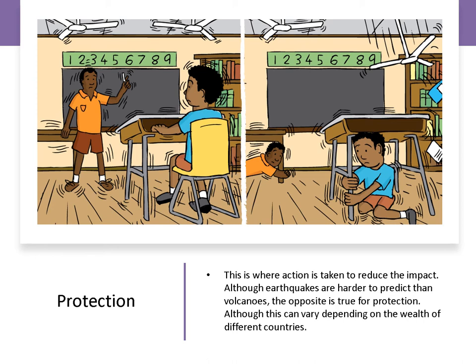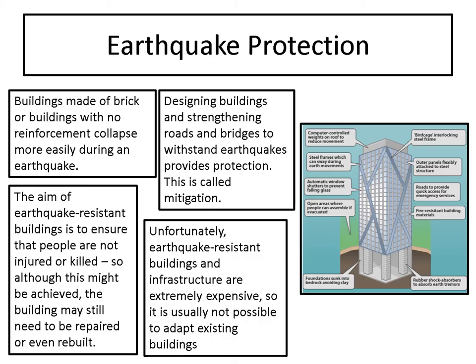Moving on — we have protection. The idea of protection is the action we take to reduce the impact when the earthquake or volcano happens. Now, earthquakes are harder to predict than volcanoes, but it's actually the opposite in terms of protection — it is easier to protect yourself from an earthquake than from a volcano. The biggest problem is that buildings built with bricks or with no reinforcement are actually easier to collapse. A lot of traditional brick buildings will collapse, so what you need to do is make them earthquake resistant.